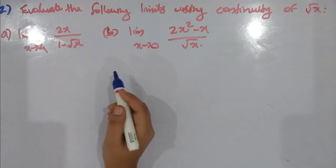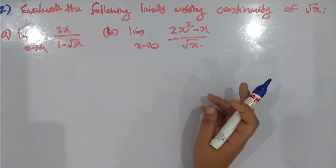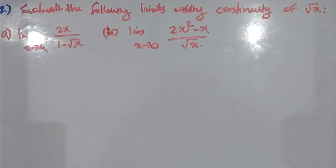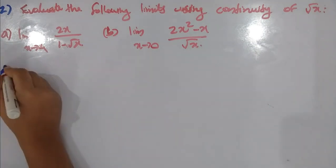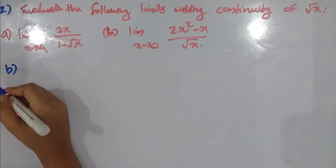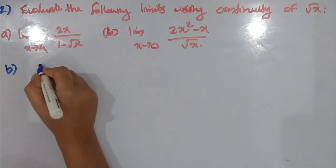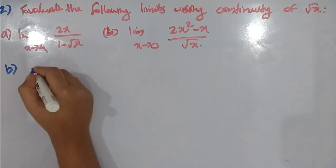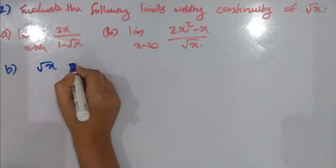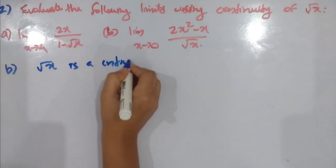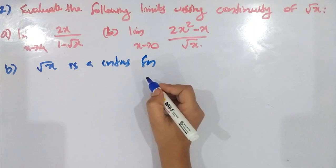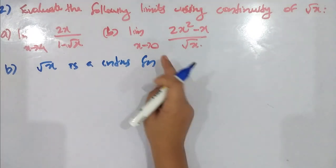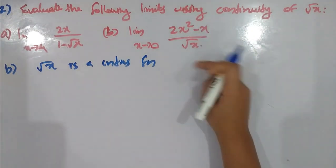Now I will share the question. The function is (2x² − x) / √x. This is our function. Since √x is a continuous function, the denominator is √x. As x tends to 0, this function has a limit.